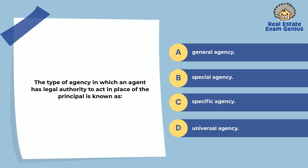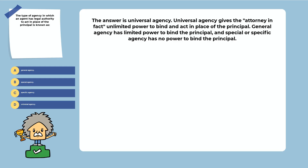The type of agency in which an agent has legal authority to act in place of the principal is known as: general agency, special agency, specific agency, or universal agency. The answer is universal agency. Universal agency gives the attorney-in-fact unlimited power to bind and act in place of the principal. General agency has limited power to bind the principal, and special or specific agency has no power to bind the principal.